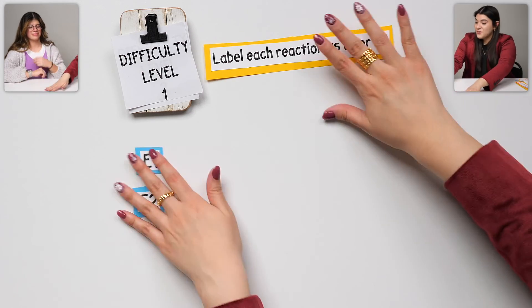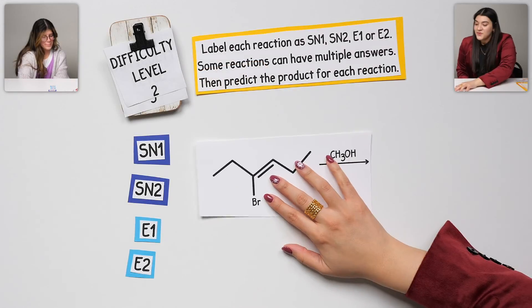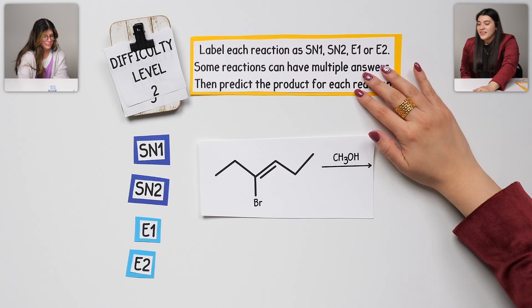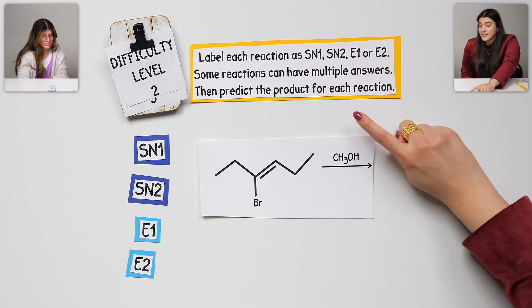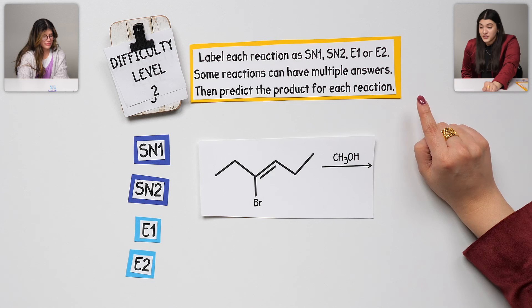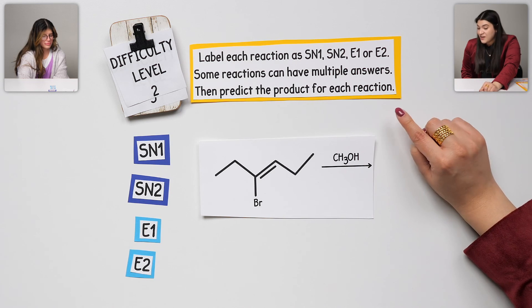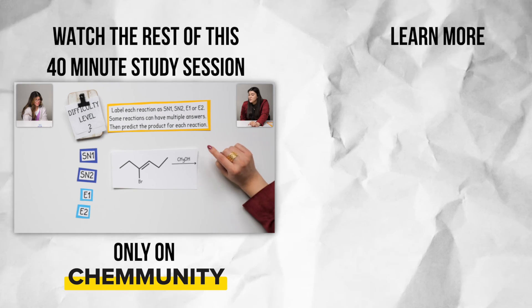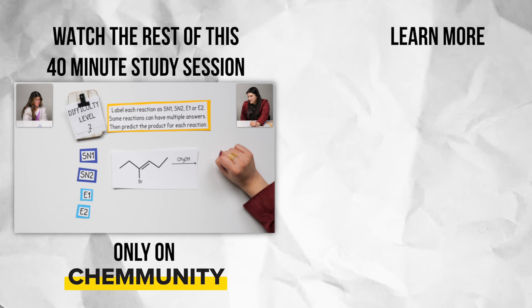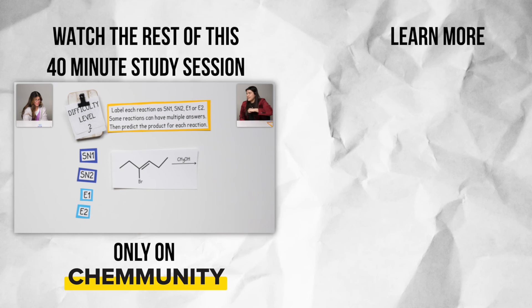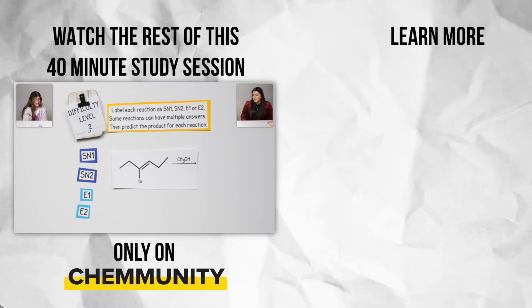Let's increase the difficulty level now. Moving on to the next one. This says, label each reaction as SN1, SN2, E1, or E2. Some reactions, of course, can have multiple answers. Then, predict the product for each reaction. Let's start here. Let's just identify what it is.